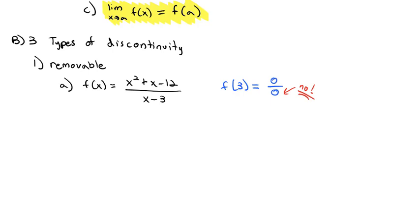However, if I took my function and I factored it, we'd get, what, 4 and 3? It's plus 4 and minus 3 over x minus 3. We can then divide out the x minus 3, and we've removed the discontinuity or the problem. This is a removable discontinuity because we were able to algebraically remove the part that was discontinuous.